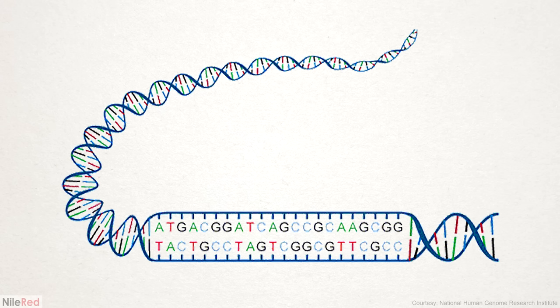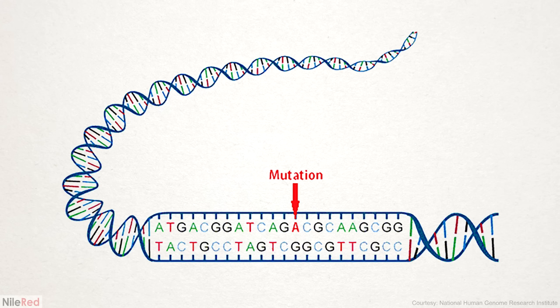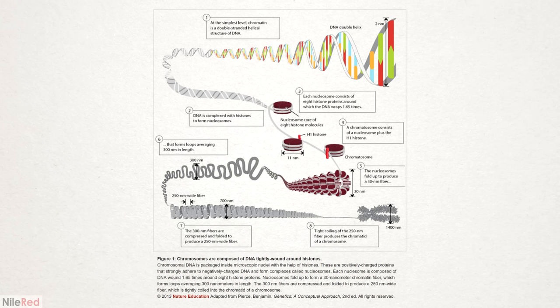In this double-stranded system, the cell only reads the information from one strand and the other is kept as a backup. For example, if a mutation occurs and a C is swapped for an A, the cell can recognize and fix this because the A wouldn't properly pair with the G. Or if some sort of damage occurs to a large section of one strand, the cell can simply cut it out and rebuild it based on the other one.